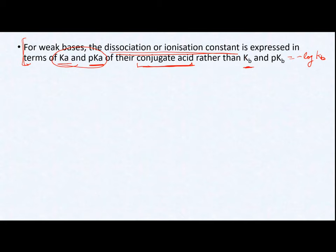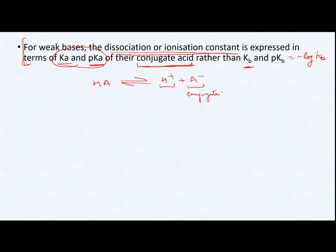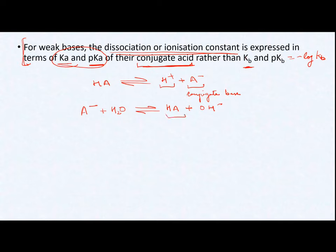You will understand better with an example. For example, I have one acid HA. This acid dissociates to form H⁺ and A⁻ ion. This H⁺ is your proton, and A⁻ is your conjugate base for that acid. If I add this conjugate base with water, it will act with water to give HA and OH⁻ ion — and this HA is my conjugate acid.